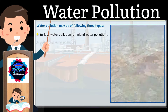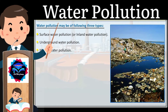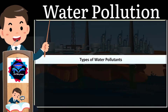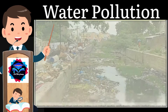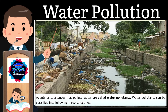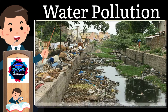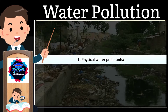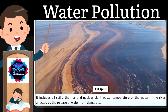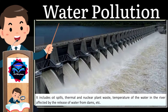Two, underground water pollution, and three, marine water pollution. Types of water pollutants: agents or substances that pollute water are called water pollutants. Water pollutants can be classified into three categories. One, physical water pollutants — these include oil spills, thermal and nuclear plant waste, and temperature changes in river water affected by the release of water from dams.